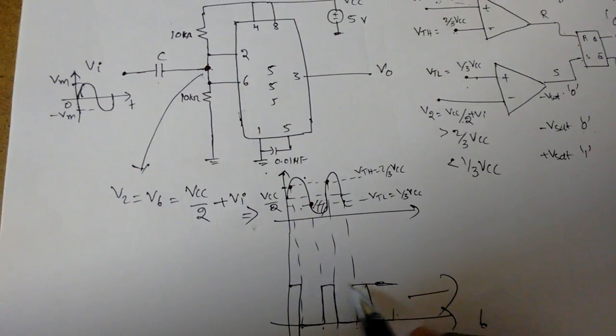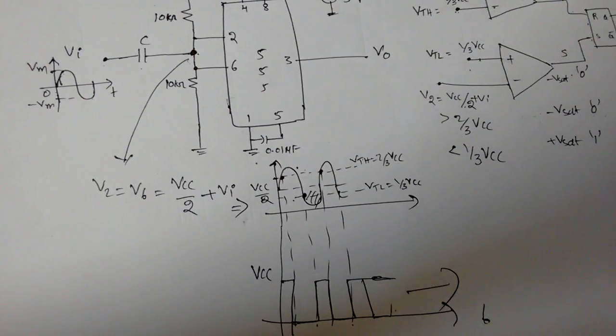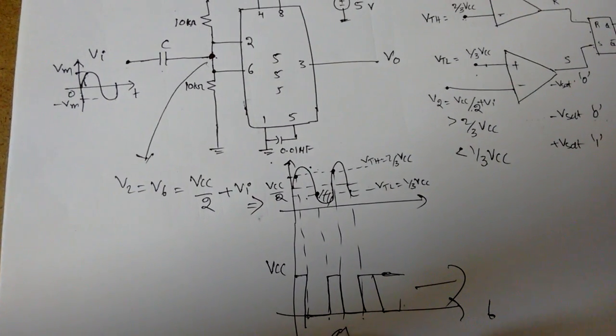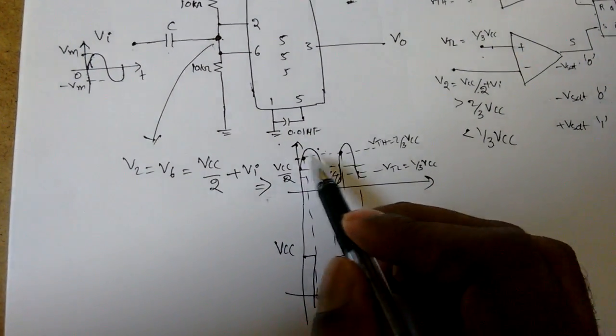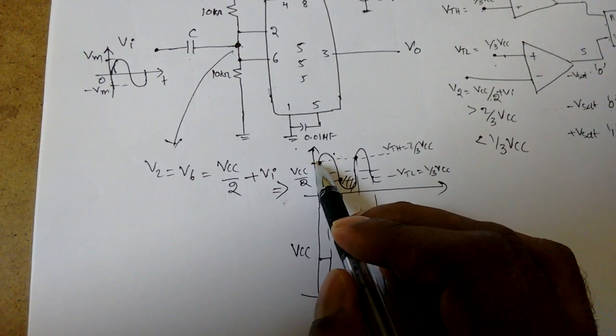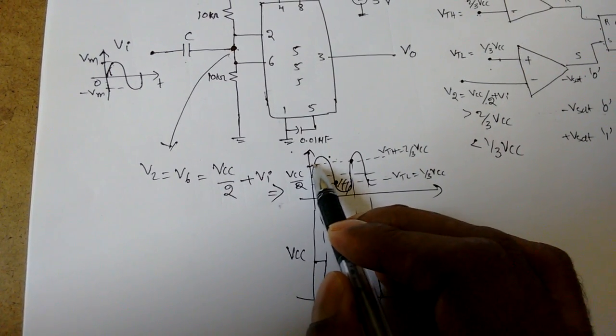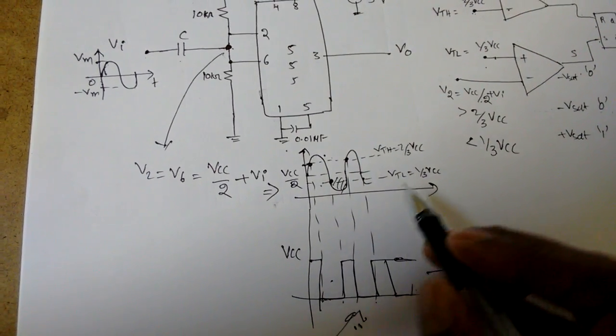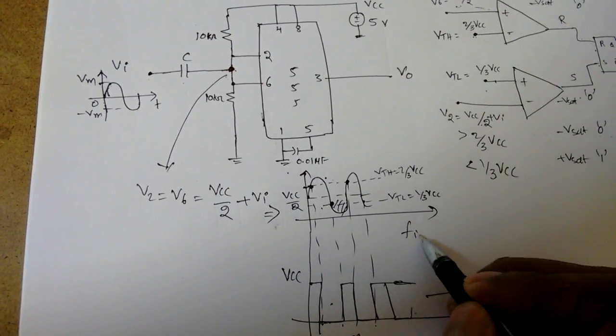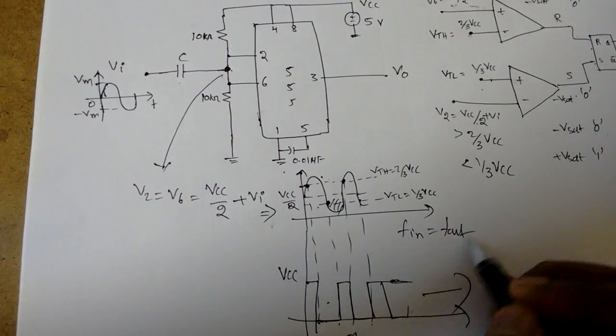It will generate a square waveform. Maximum is VCC with some frequency of oscillations. What is this frequency of output? It is same as the input, because how many times the 2 by 3 VCC is happening, that many times the output is changing. So the frequency of input is equal to frequency of output.